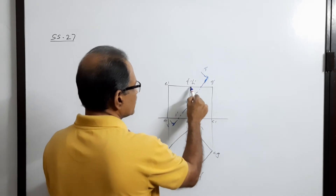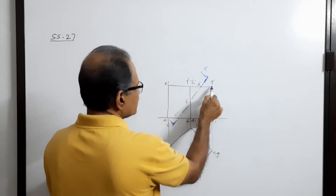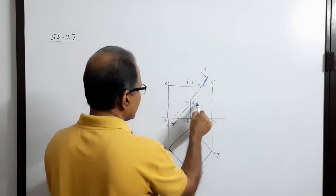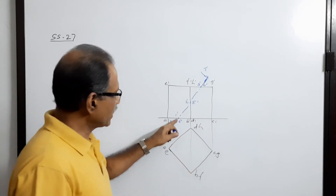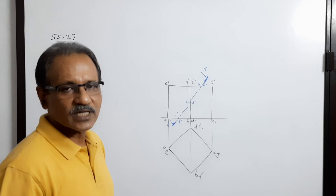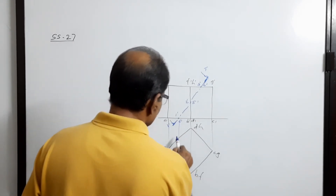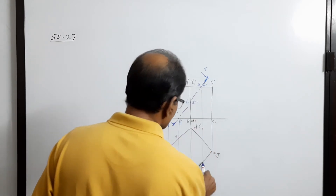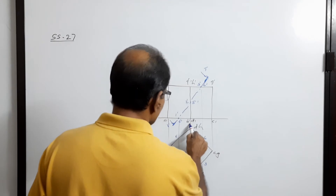The cutting plane passes through points: at edge 2-dash through h-dash and f-dash, at 3-dash through g-dash, at 4-dash through g-dash and h-dash — same point — at 5-dash, again at 1-dash, and 6-dash. So we have cutting points 1-dash, 2-dash, 3-dash, 4-dash, 5-dash, 6-dash. Drop them to the plan to get points 1, 6, 3, 4, 2, and 6.